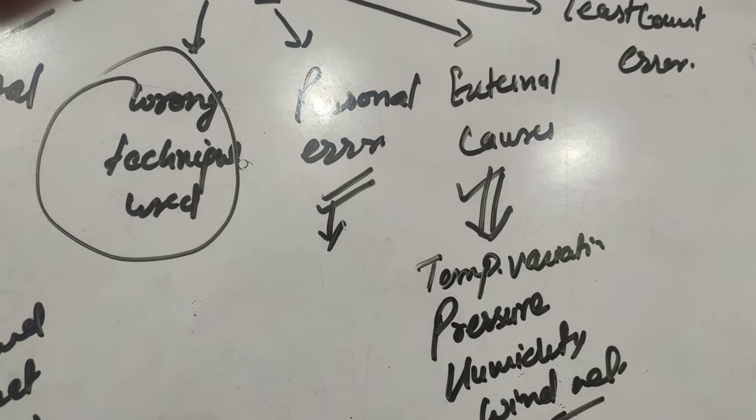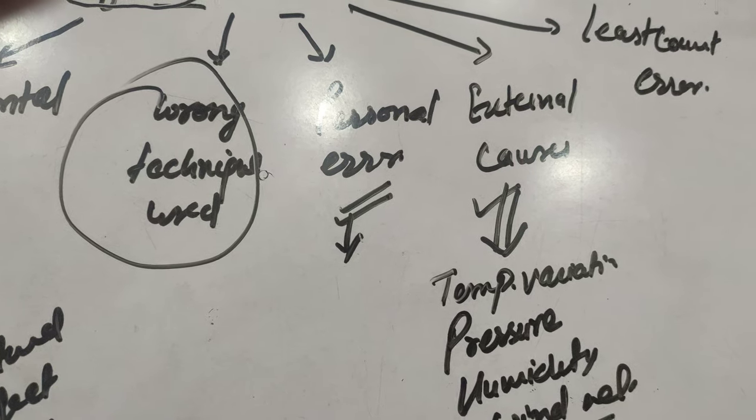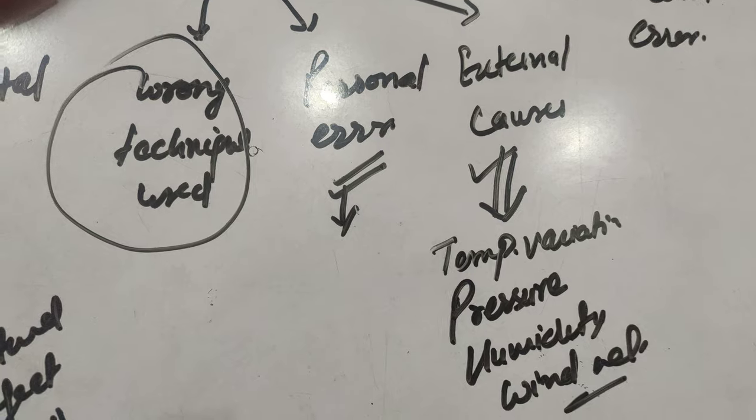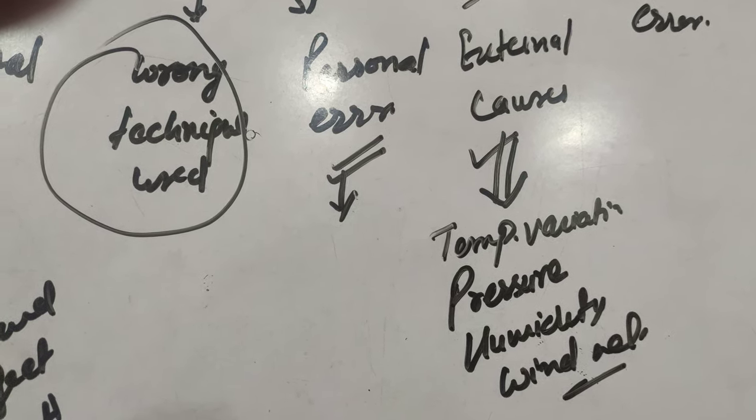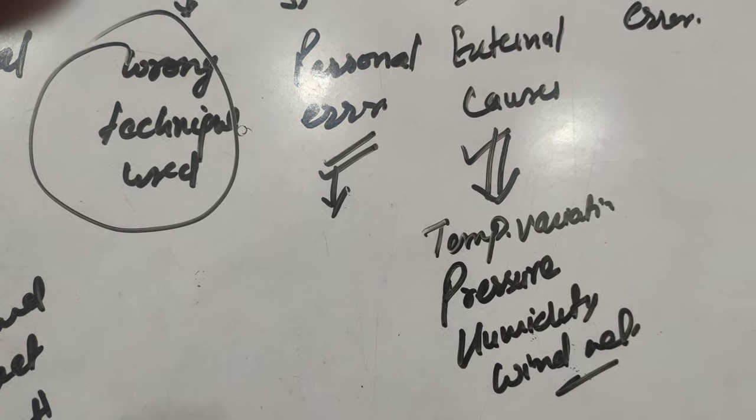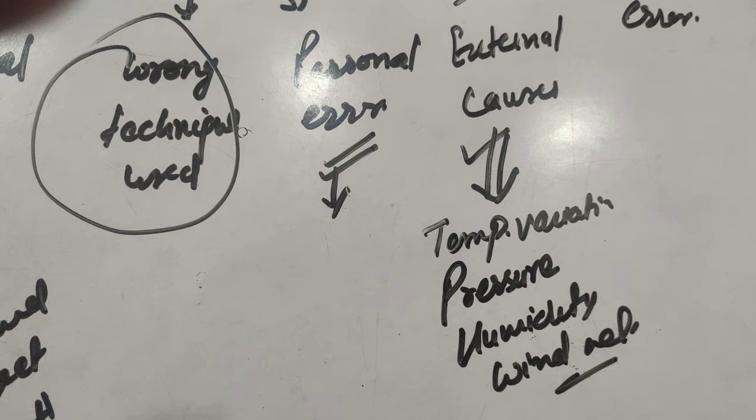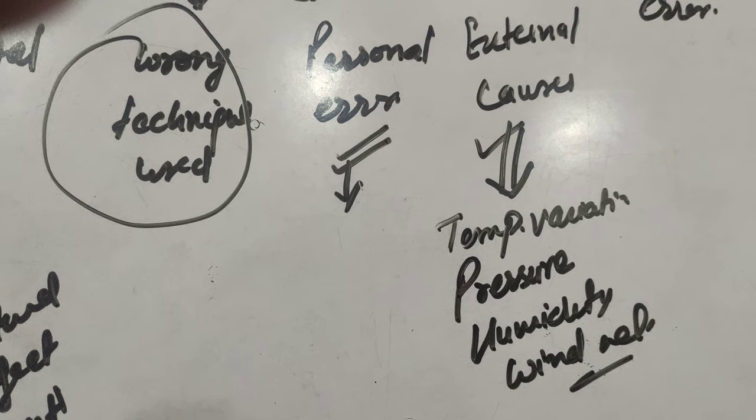A very simple example for this we can give. For example, again for doing the electrical experiments, we know that when the current passes through the wire, it gets heated up due to the passage of current. So if it heated up, accordingly the resistance will increases and hence the measured value will vary. Such kind of errors are called the errors due to external causes.